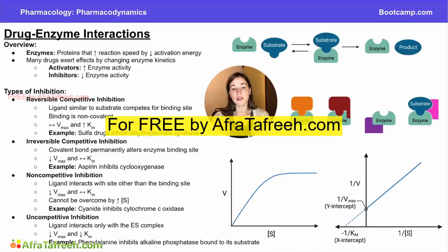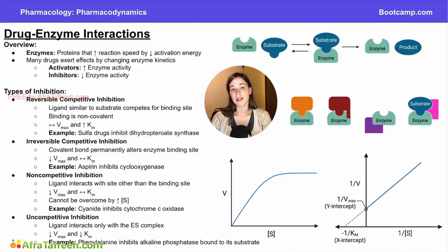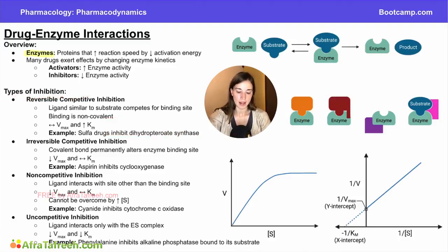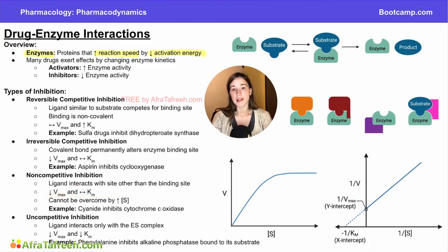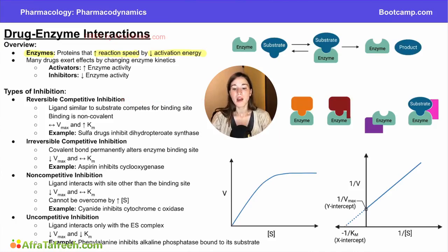In this video, we're going to talk about drugs that work by affecting enzyme kinetics. In the past few videos, we've been talking about enzymes, which are proteins that increase the rate of a reaction by decreasing the activation energy. Without enzymes, the rates of many reactions wouldn't be fast enough to sustain life. Since enzymes are such a critical component of many biological processes, drugs that target enzymes and affect their activity can be very powerful.